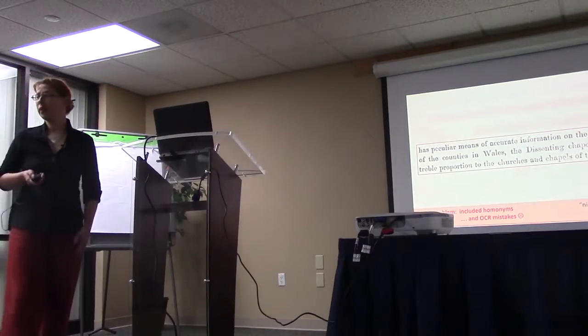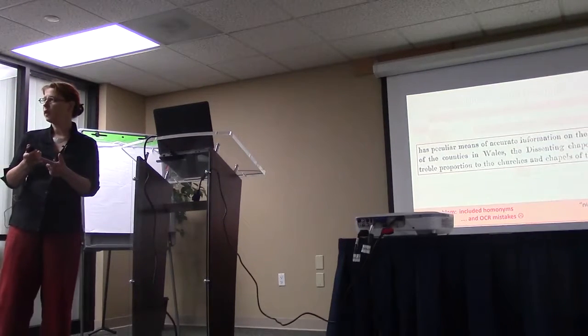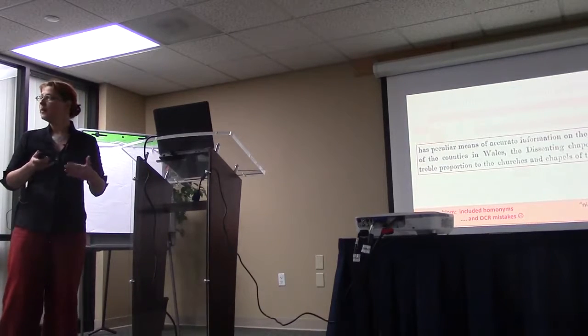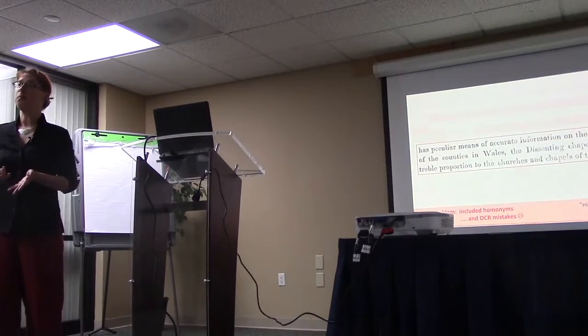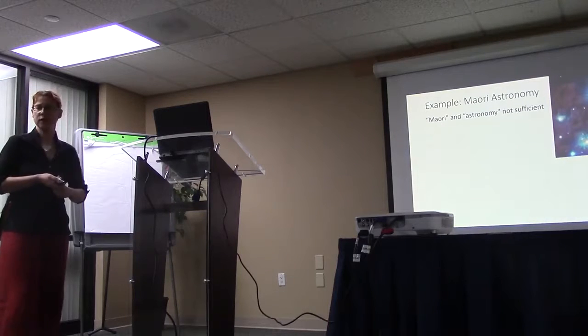So you might think this is actually rather complicated. So you have your synonyms, then you need to make sure that you get rid of the homonyms. You look at all the results. You get rid of all your OCR mistakes that are in there. Well, actually, MIUI is one of the easier and simpler cases. So if we look, for example, at the example of Maori astronomy.